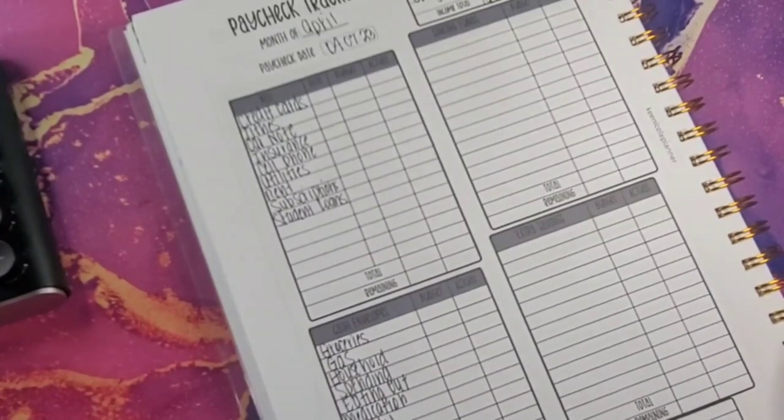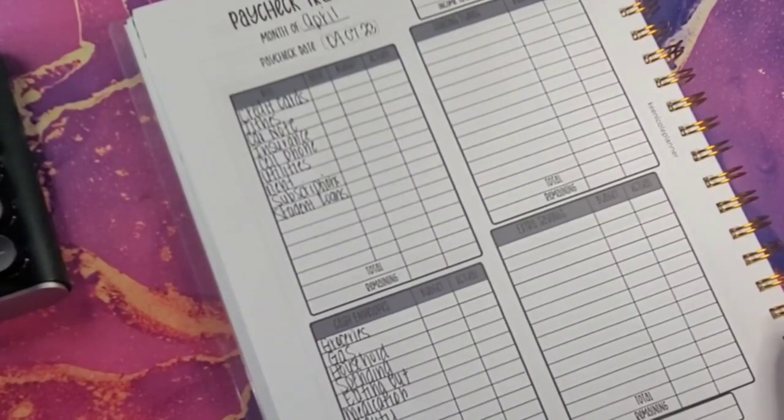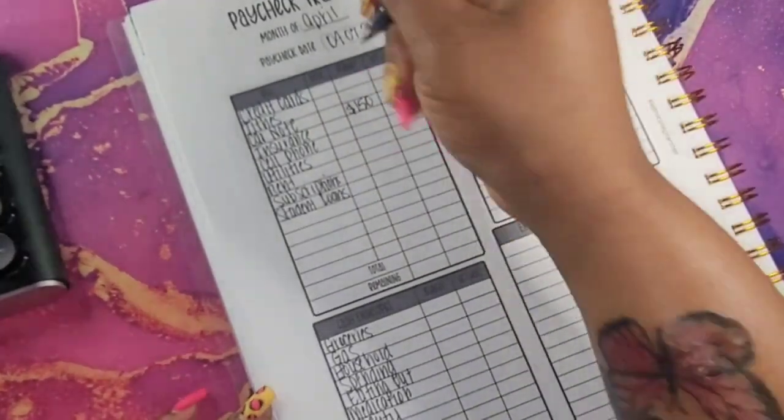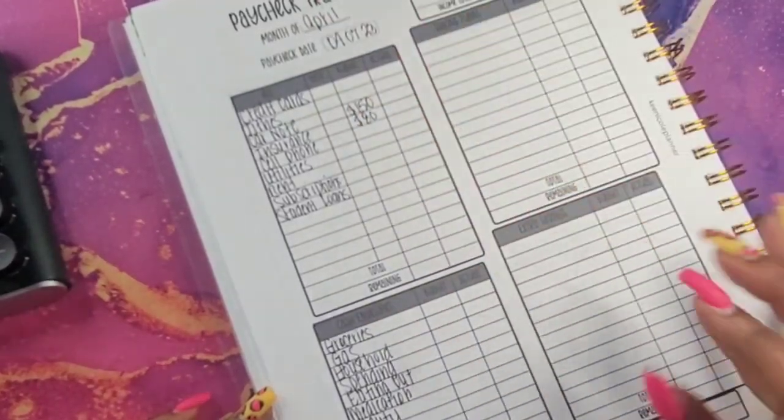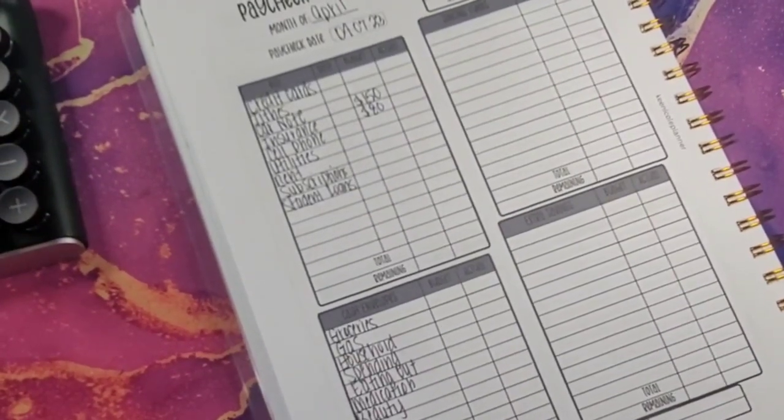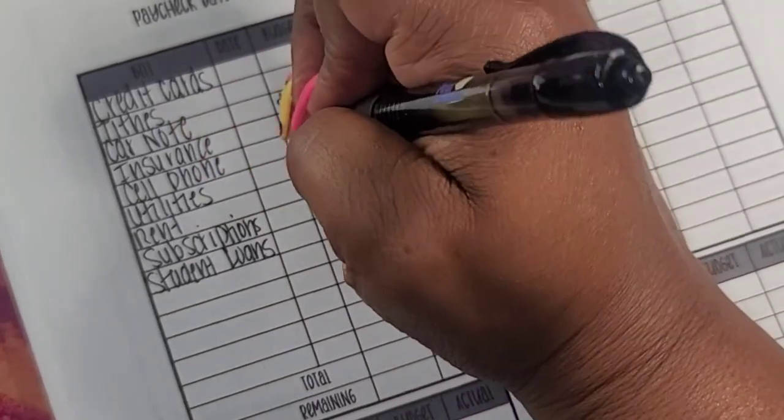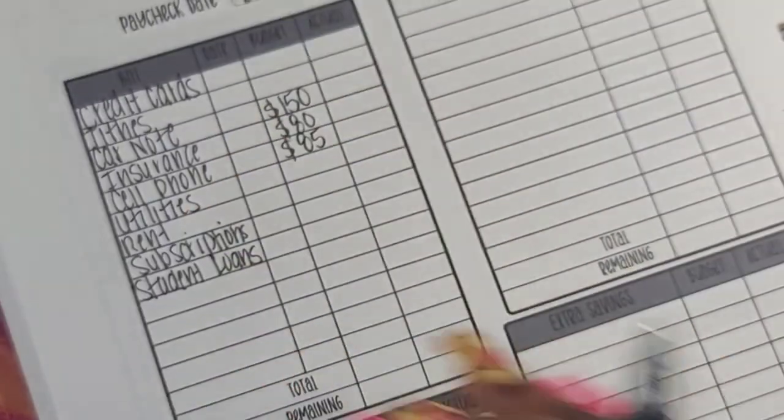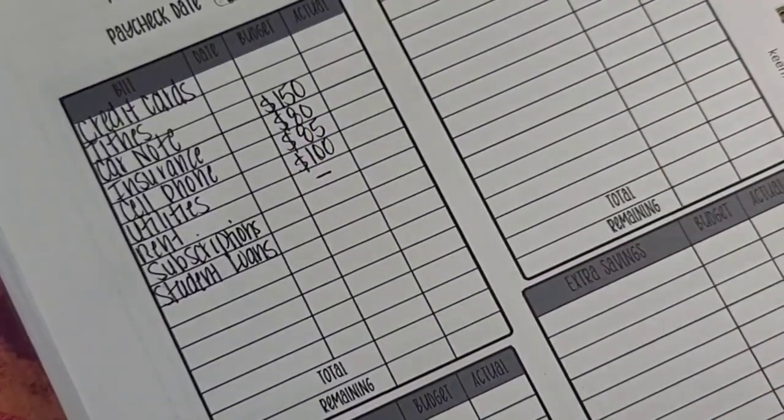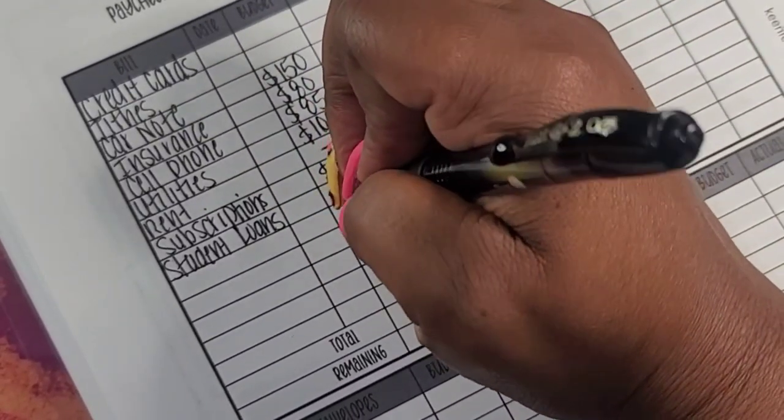All right, so for my credit cards, I'm not putting anything in credit cards. Todd's isn't getting anything either. For my card notes, I am going to do $150. For my insurance, I'm going to do $80. Let me see if I need to zoom in just a little bit so you guys can see. Okay. For my cell phone, I'm going to do $85. For my utilities, we're going to do $100. Rent isn't getting anything out of this check. Subscriptions is getting $15. And student loans will be $25.